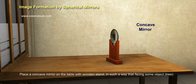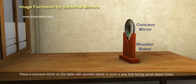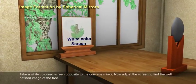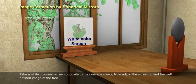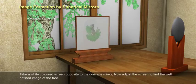To find the focal length of given concave mirror, place a concave mirror on the table which would stand in such a way that facing some object tree. Take a white-colored screen opposite to the concave mirror.